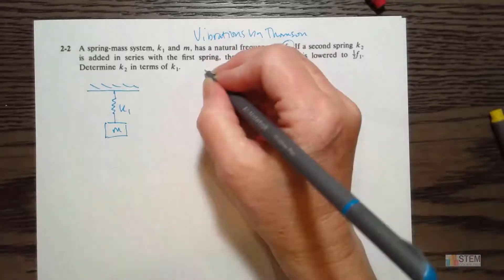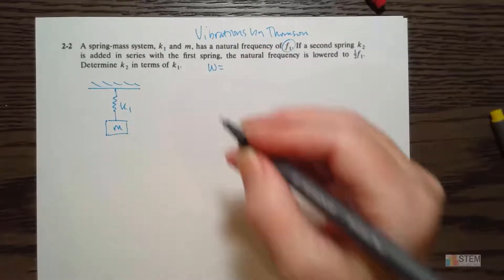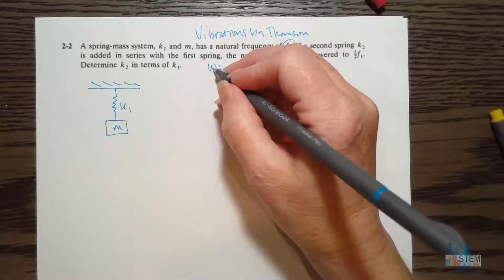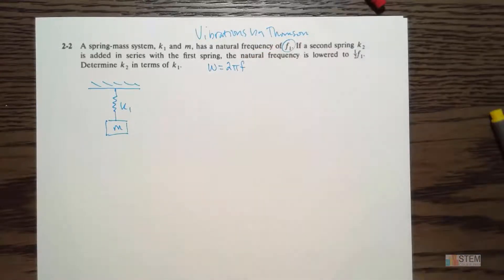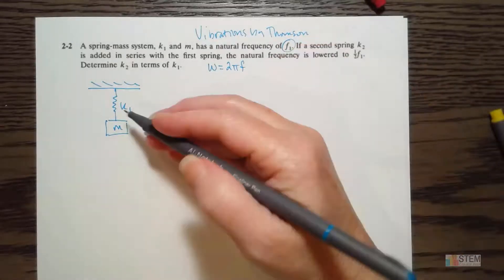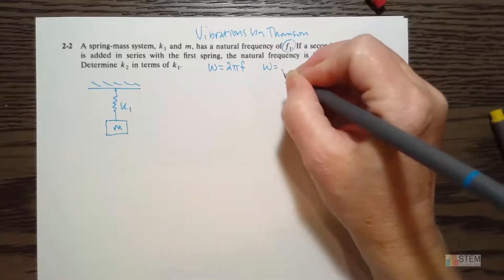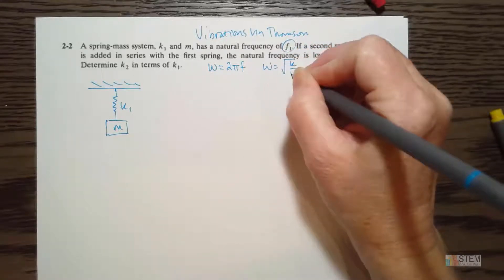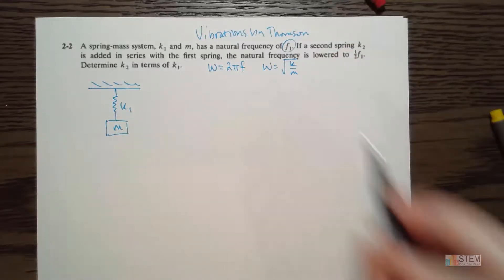Now before we start writing things, let's remind ourselves of the relationship with omega and frequency. The angular frequency we know is 2 pi f, where f is that natural frequency. And then for a spring mass system, we know that omega is also equal to the square root of k over m. These are just generic equations right here.